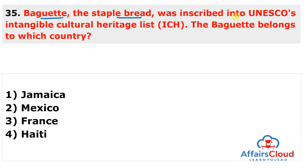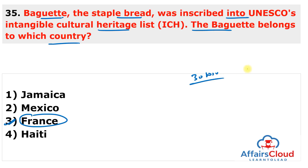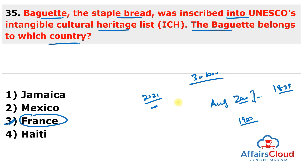Question 35: Baguette, the staple French bread, was inscribed into UNESCO's Intangible Cultural Heritage list. Which country does it belong to? France. The baguette was inscribed on 30th November. It is a long, thin loaf made of flour, water, salt and yeast. Some believe it was invented by Auguste Zang, a Viennese baker and entrepreneur, in 1839, using a steam oven. It gained its official name in 1920. In March 2021, France nominated the baguette as its candidate for the UNESCO ICH list.